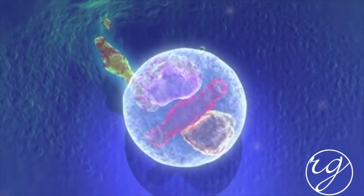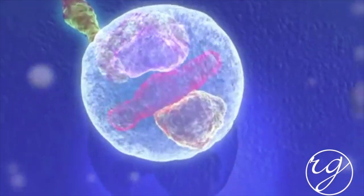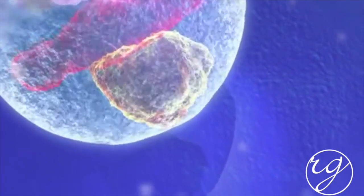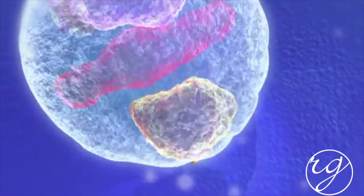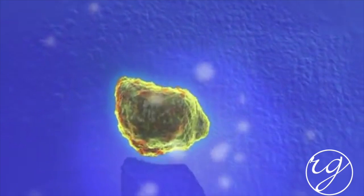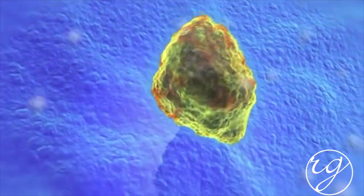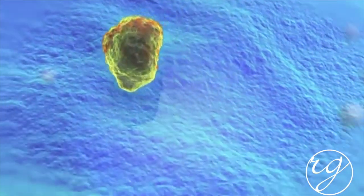The toxin is now contained in a membranous vesicle inside the cell. Soon after, the light chain is released into the cytoplasm of the nerve terminal, where it begins to cleave one of the SNARE proteins.